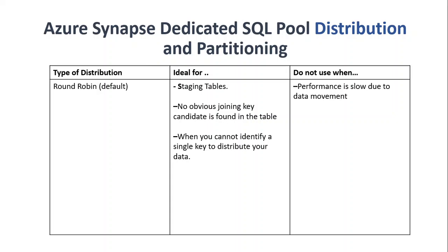Round robin is the default distribution and is ideal for staging tables. Use it when you can't find a suitable join key, or when you can't find a single primary key to use for hash distribution. However, the drawback of round robin is that it can cause a lot of data shuffling, so performance can be slow. Avoid it for large tables or complex queries.